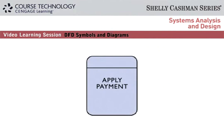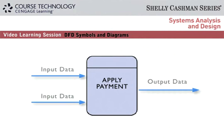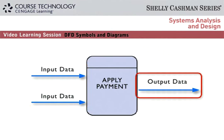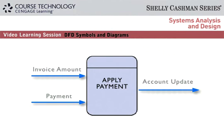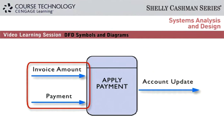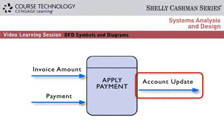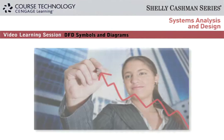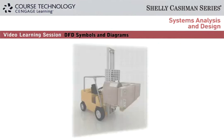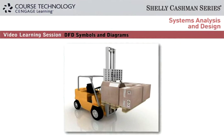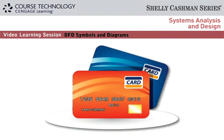A process performs one or more tasks or functions. Each process gets a number and a descriptive name. To function properly, a process needs one or more inputs and one or more outputs. Here's an example of input and output data. The apply payment process receives invoice amount and payment data and produces output called account update. A process can calculate sales trends, reorder inventory when supplies get low, or verify a customer's credit status.